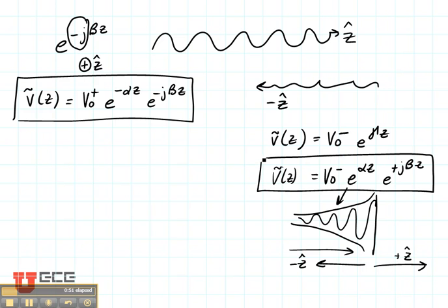The interesting effects that we see are when these two waves add up. That happens when you send a wave down a transmission line, and it reflects off the end, which most often happens. In that case, our total voltage is going to be the sum of the two. Electromagnetic waves are linear. They simply add up.